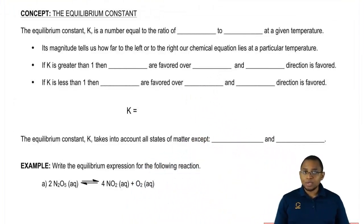We're going to say that the variable we use to illustrate our equilibrium constant is the variable K. K is a number equal to the ratio of products to reactants at a given temperature.